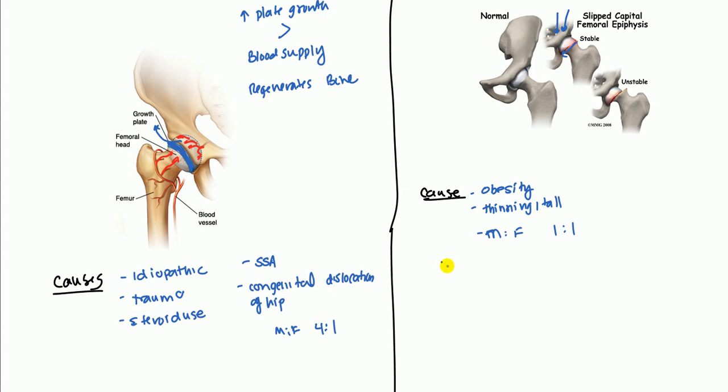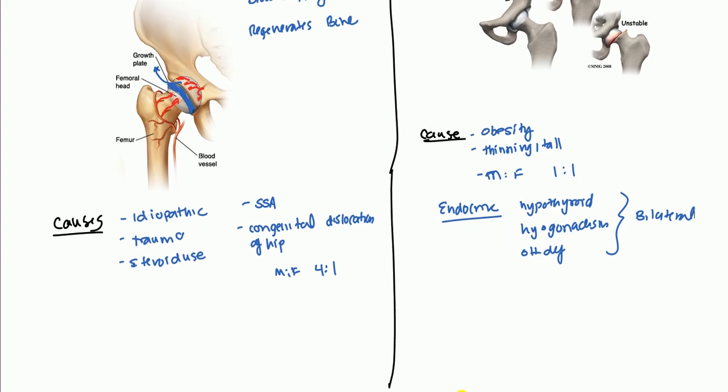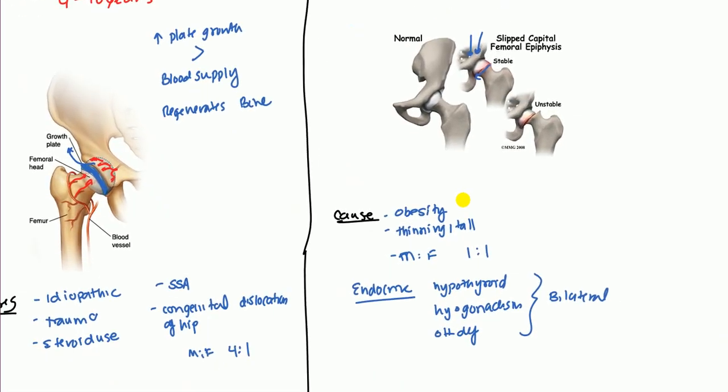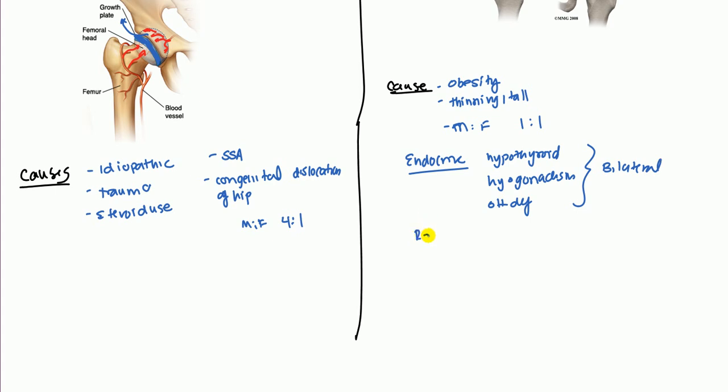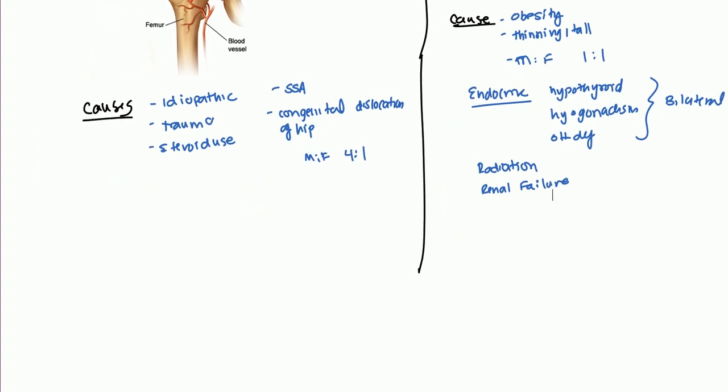The other thing is there are some endocrine causes of SCFE, such as hypothyroidism, hypogonadism, and growth hormone deficiency. Usually when you have endocrine causes, these are going to be bilateral because it's going to affect both sides of the hip equally. The other risk factors include radiation - patients who have cancer in the abdominal region or hip region can have this - as well as renal failure. This might be due to a loss of calcium or decrease in production of vitamin D, which is very important for bone growth.